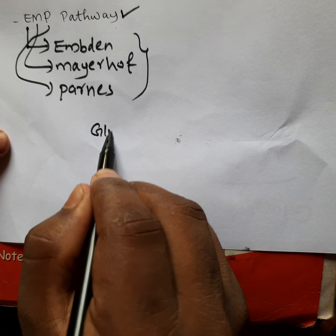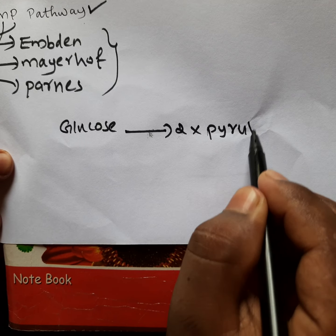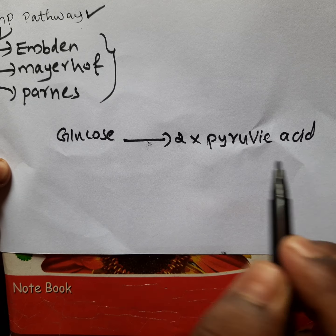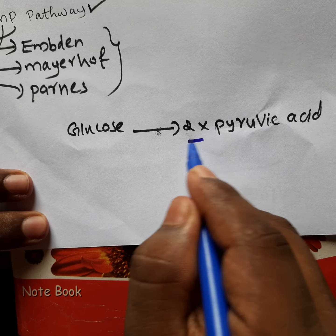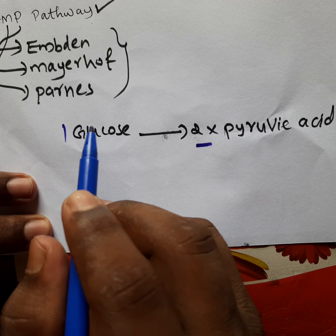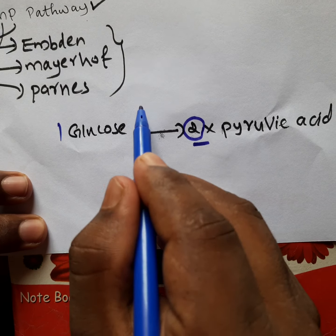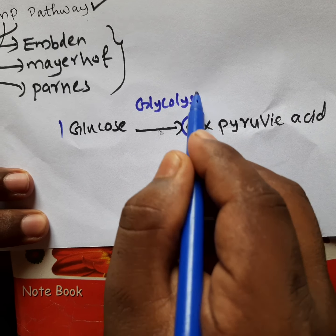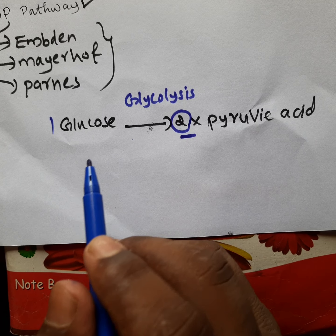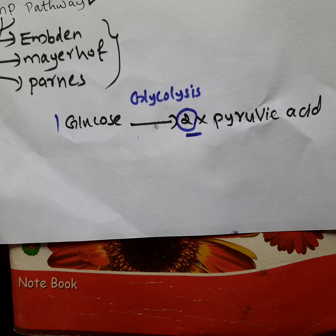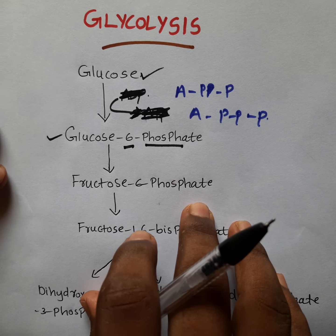Glycolysis is also known as the EMP pathway. Glycolysis is the conversion of one molecule of glucose into two molecules of pyruvic acid. This conversion involves nearly 10 steps, all of which we are going to discuss.